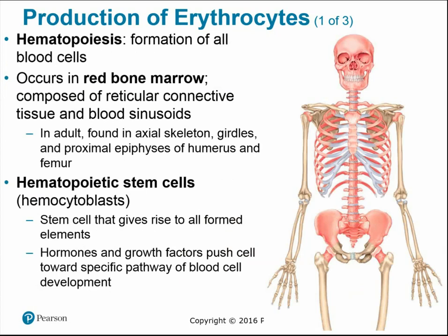Hematopoiesis is the formation of all blood cells — 'poiesis' meaning formation of. This process occurs in the red bone marrow. In adults, red bone marrow is found in the axial skeleton, the pelvic girdles, and the proximal epiphysis of the long bones. Hematopoietic stem cells, sometimes called hemocytoblasts, are the base stem cells that give rise to all formed elements. Different hormones and growth factors push cell development toward a specific pathway.